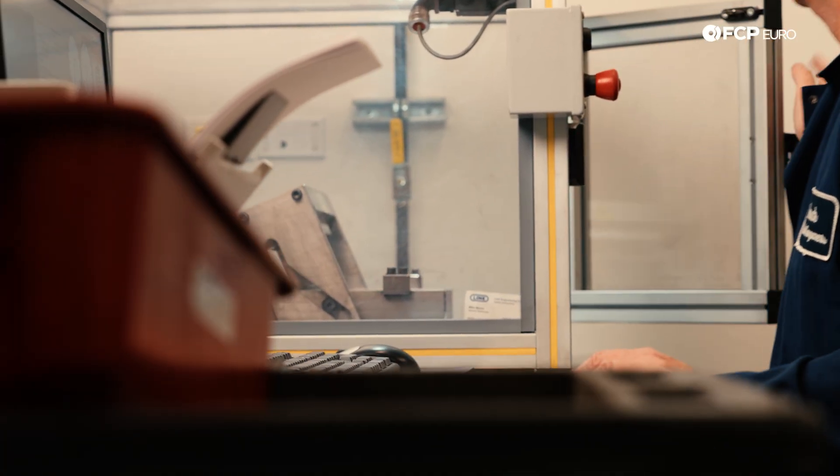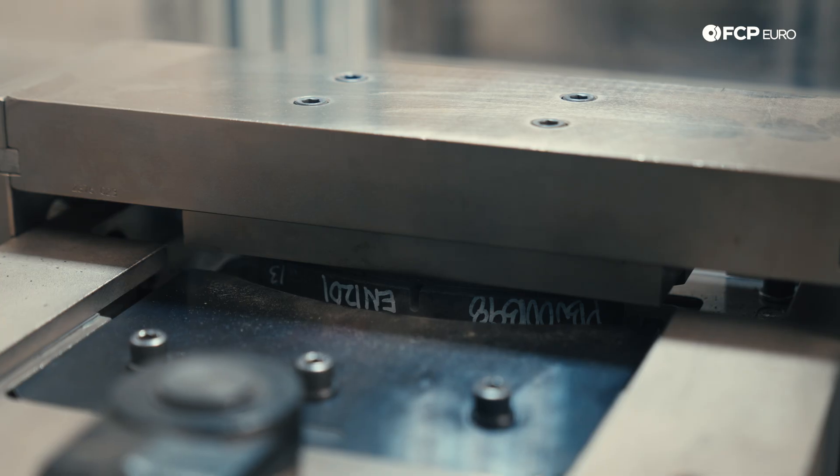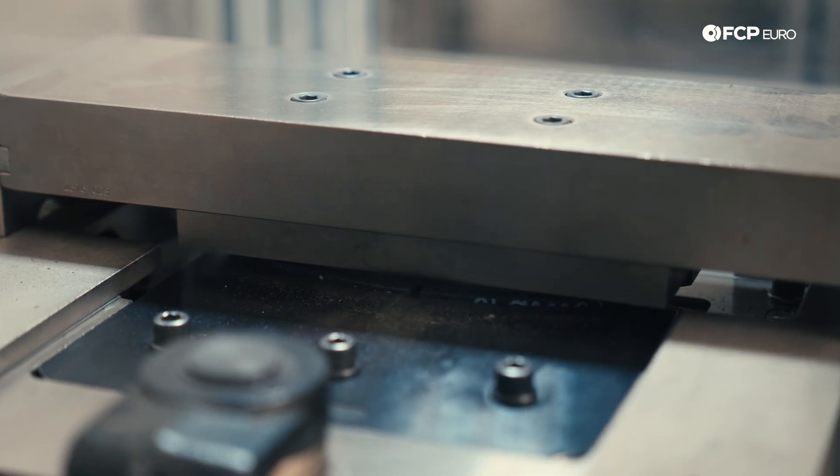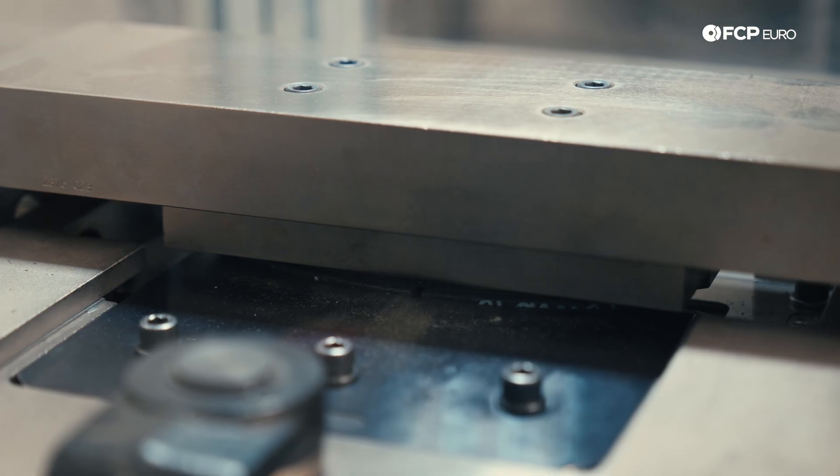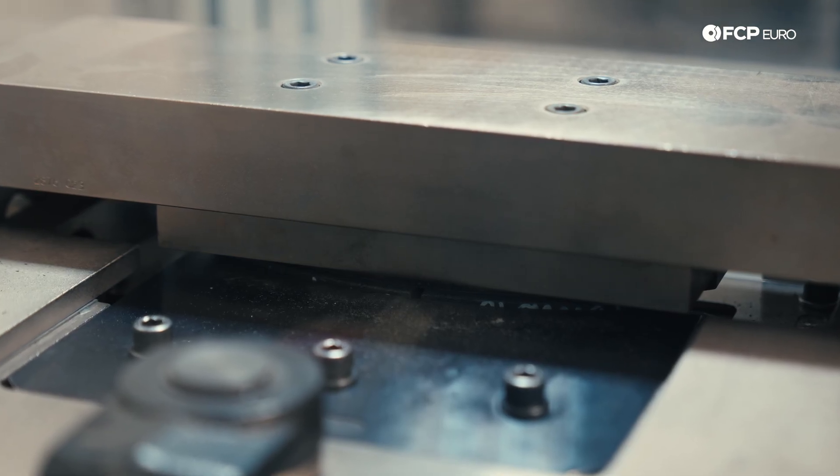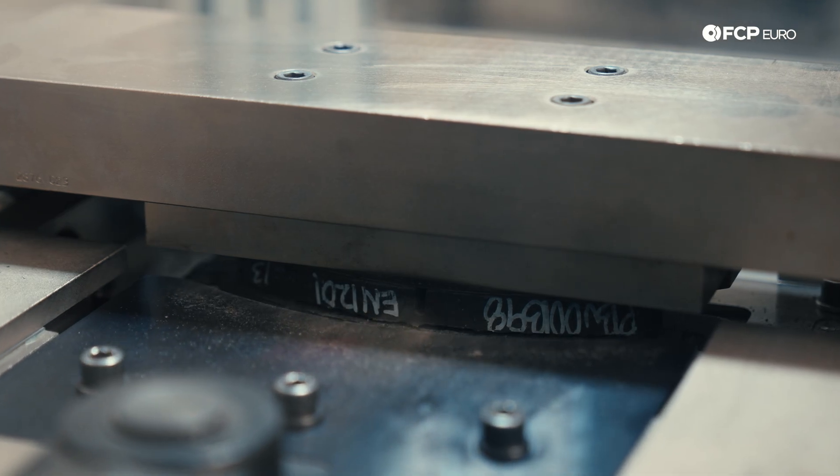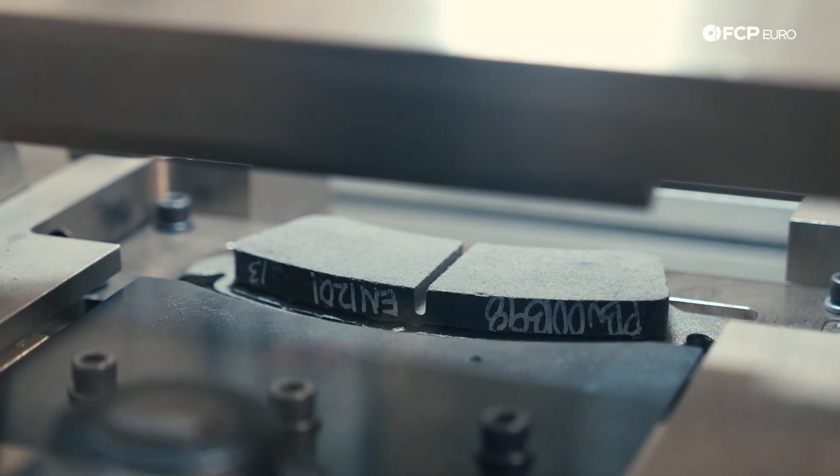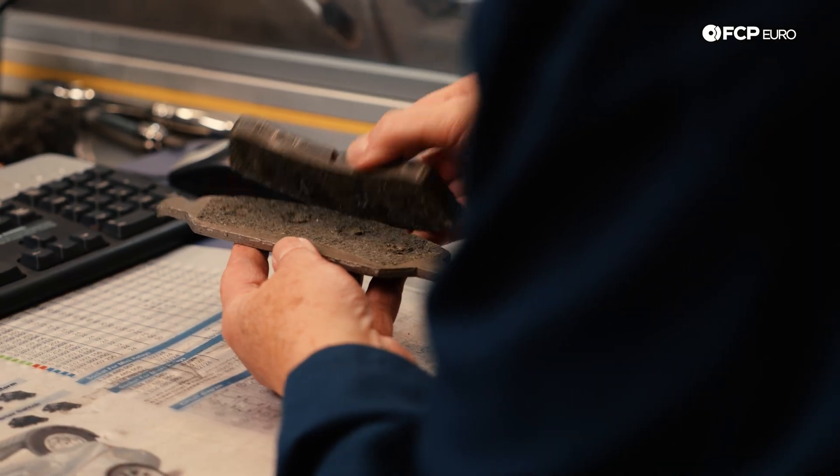Next, they shear the friction material off the backing plate to stress test the bond. It's extreme, but it proves the pad won't fail under real-world braking. They're checking for even adhesive coverage, because safety starts with consistency. Dust, noise, and wear matter, but nothing comes before stopping power.